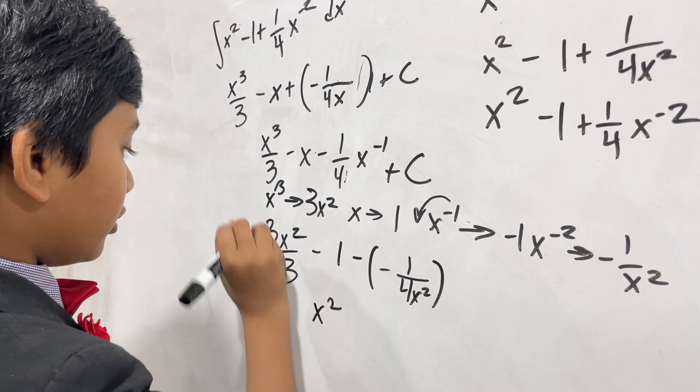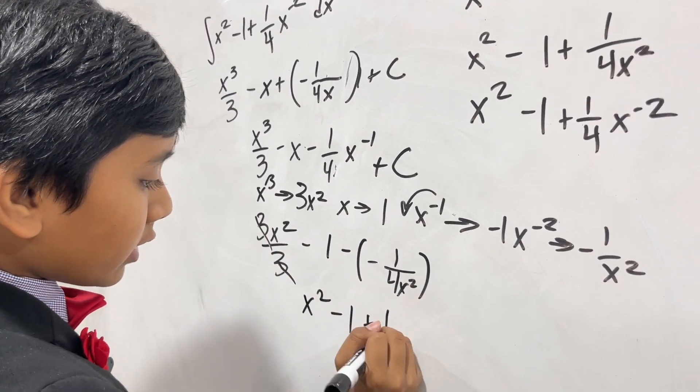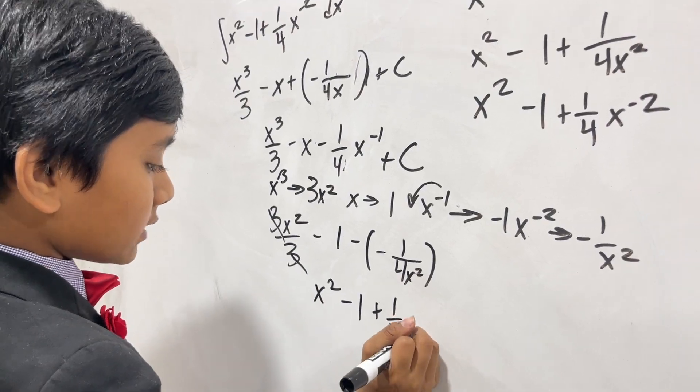We reduce here, x squared minus 1 plus 1 over 4x squared.